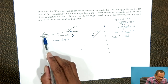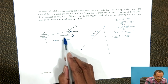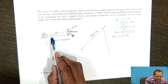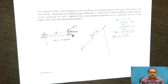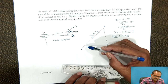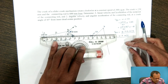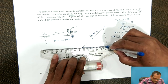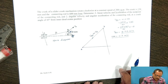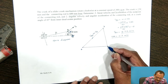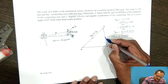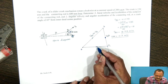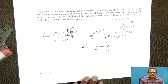As the crank rotates, the sliding block will slide along the line of reciprocation. The slider will slide along line OA with respect to fixed point O. From point O, draw a vector parallel to the path of reciprocation of the slider. This vector meets the previous vector at point A. Vector BA represents the velocity of A with respect to B, and vector OA represents the linear velocity of slider A.